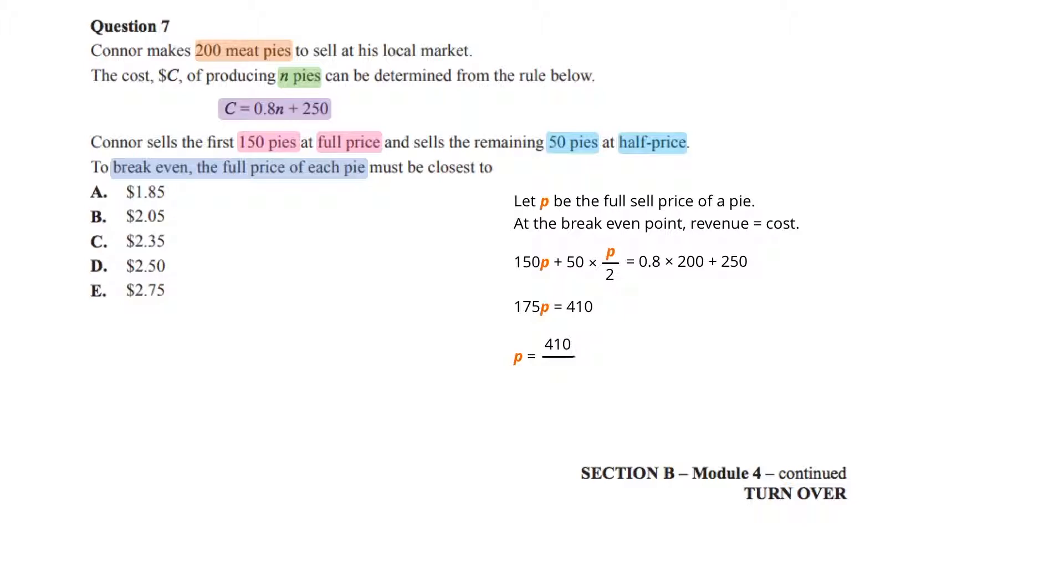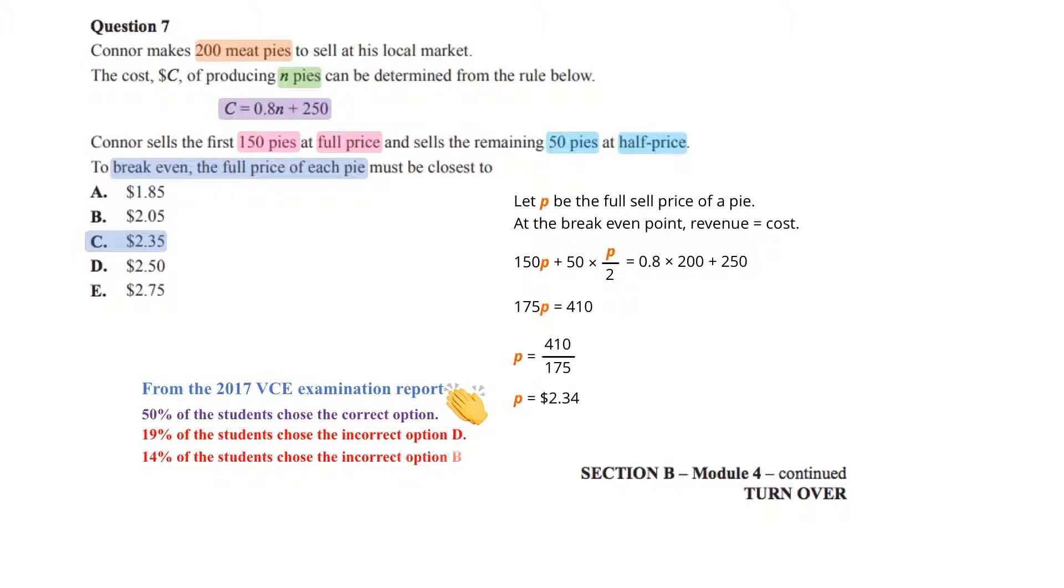We solve the equation for P. So, we end up with the full price of a pie being 2.34 closest to 2.35. So, the answer we are after is option C. From the 2017 VCE examination report, 50% of the students chose the correct option, with 19% of the students choosing the incorrect option D and 14% choosing the incorrect option B.